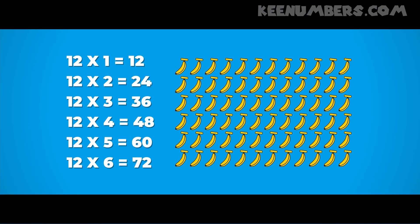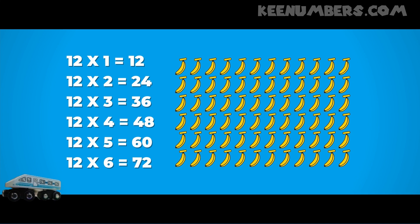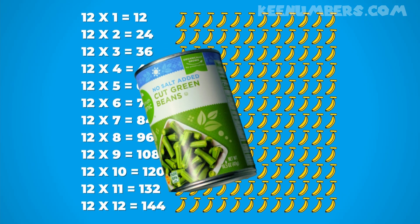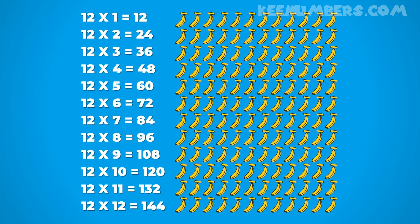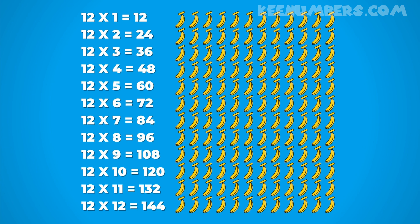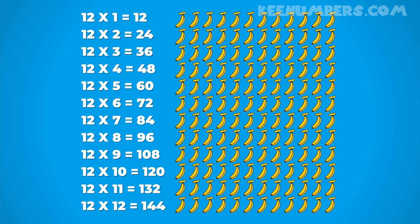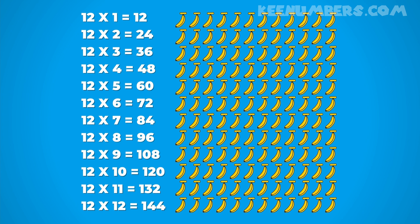More bananas! If you have one 12, that's 12. Two 12s, that's 24. Three 12s, that's 36. 12 4s, that's 48. 12 5s is 60. 12 6s is 72. 12 by 7, that's 84. 12 by 8 is 96. 12 by 9 is 108. 12 10s is 120. 12 11s is 132. 12 12s is 144.